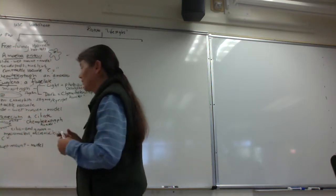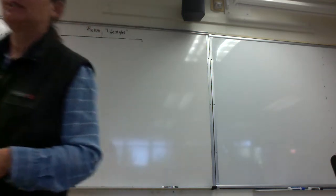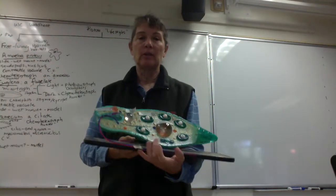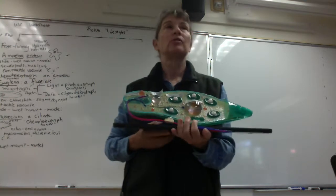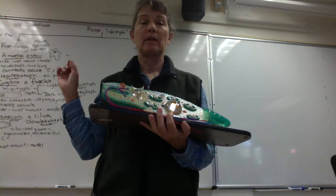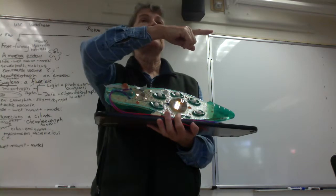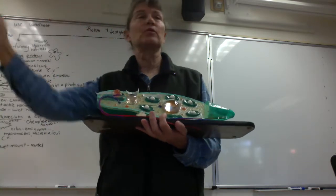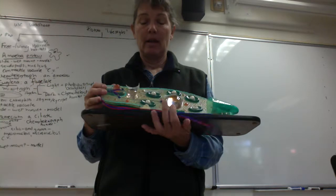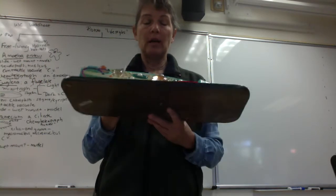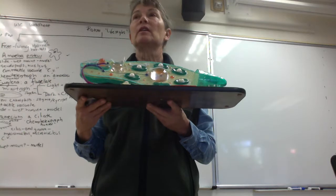So next, the one you're going to be looking at is called Euglena. Again, you have prepared slides in your micro boxes. We have living cultures, and they are alive in there, just cruising around like little speedboats. Euglena, as we mentioned, are called myxotrophs.